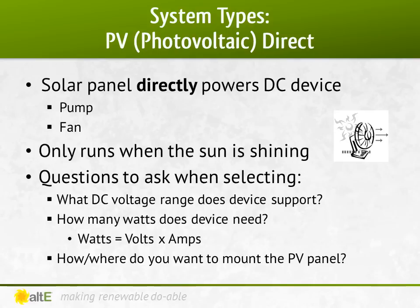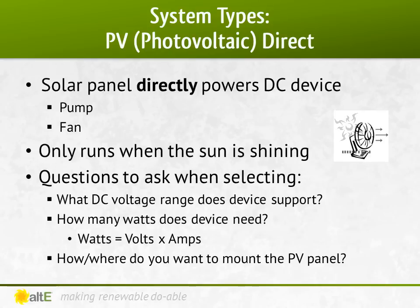It must be a DC device — you can't just plug an AC device into a solar panel instead of into the wall socket. You need to know how much power your device needs; the specs will generally give you this information. Remember, if it only gives you volts and amps, you can calculate the watts by multiplying volts and amps together. You also need to consider how and where you want the panel mounted — will you be mounting it on a shed roof or installing it on the side of a pole?